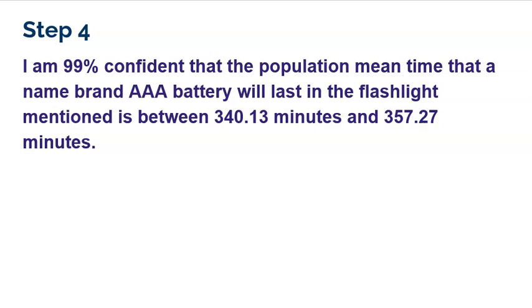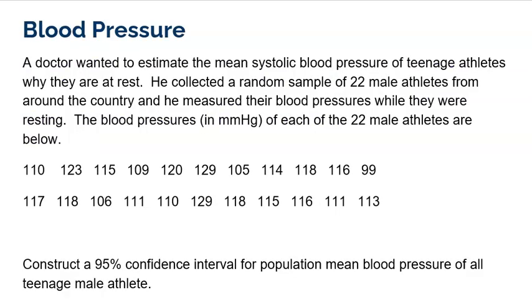Now let me just walk you through a quick problem where you can actually use the data. Here's another quick problem. We're trying to estimate the mean systolic blood pressure of teenage athletes while they're at rest. So we get a sample of 22 male teenage athletes and we get their blood pressures. And we're asked to construct a 95% confidence interval. Now notice in this problem we're not given the statistics, we're given the data.